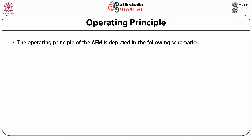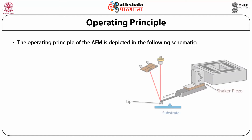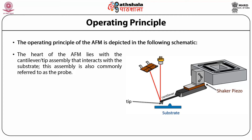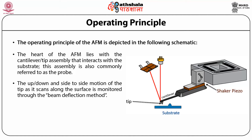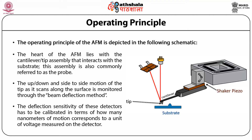The operating principle of the AFM is depicted in the following schematic. The heart of the AFM lies with the cantilever-tip assembly that interacts with the substrate, commonly referred to as the probe. The tip interacts with the substrate through a raster scanning motion. The up-down and side-to-side motion of the tip as it scans along the surface is monitored through the beam deflection method, which consists of a laser that is reflected off the back end of the cantilever and directed towards a position-sensitive detector that tracks the vertical and lateral motion of the probe.